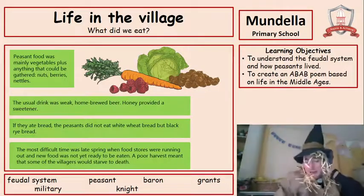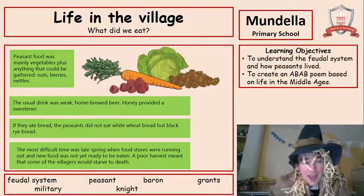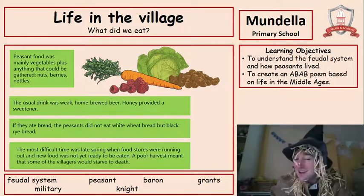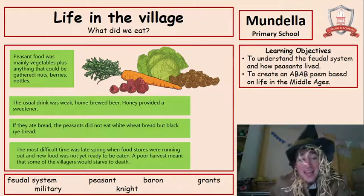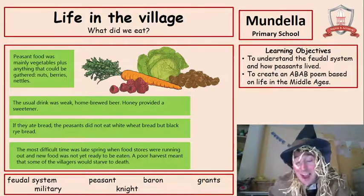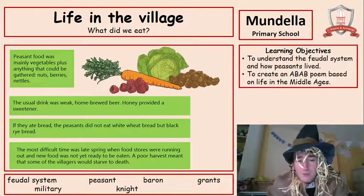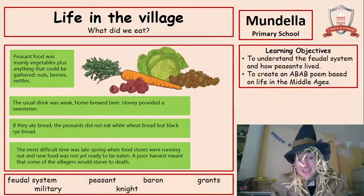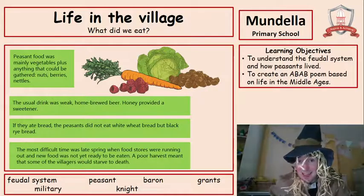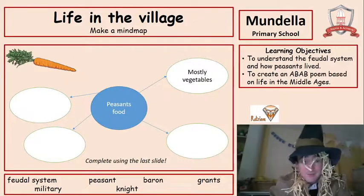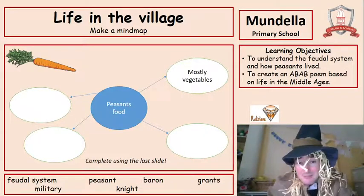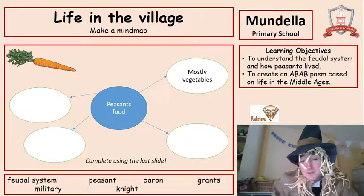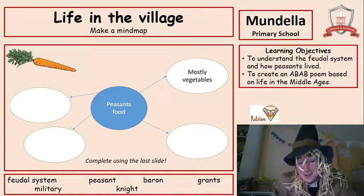What did we eat? We mainly had vegetables — anything that could be gathered from the fields, like nuts, berries, and nettles. The usual drink was weak home-brewed beer, and honey provided a sweetener. If we ate bread, it wasn't white bread but black rye bread, because it was easier to make. The most difficult time was late spring, when our food stores were running out and we hadn't yet had the harvest. If we had a poor harvest, we had even less food and people might starve to death. Now it's your turn — fill out the mind map about what peasants' food was like. You can rewind the video for help.